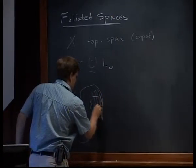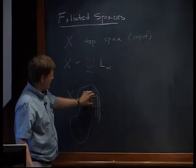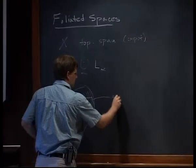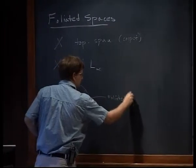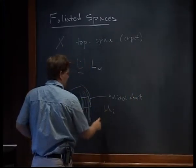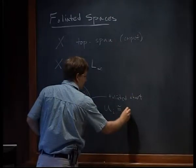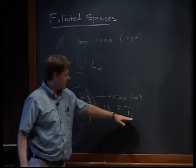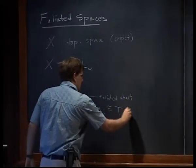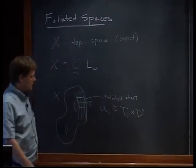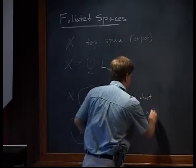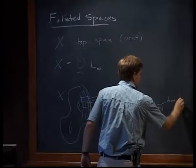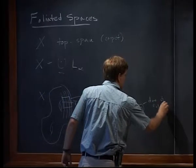The extra requirement has to do with having a covering of the space such that each piece — sometimes called a flow box or foliation box, or foliated chart — should be a product. There should be a countable covering, and each U_i should be homeomorphic to some transversal space, which in this setting is just a topological space. In the case of a foliated manifold, this would be a disk cross some disk of dimension N — so N will be the dimension of the foliation, the dimension of the leaves.